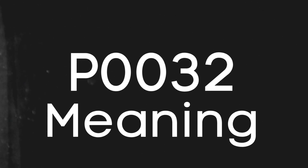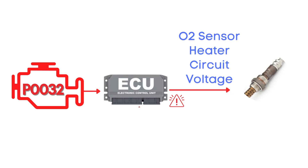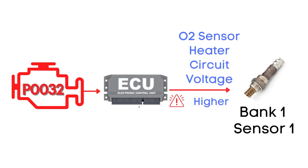This code gets triggered when the engine control module detects that the voltage in the heater circuit of the oxygen sensor is higher than expected. Specifically, we're talking about the oxygen sensor heater circuit for bank one, sensor one.